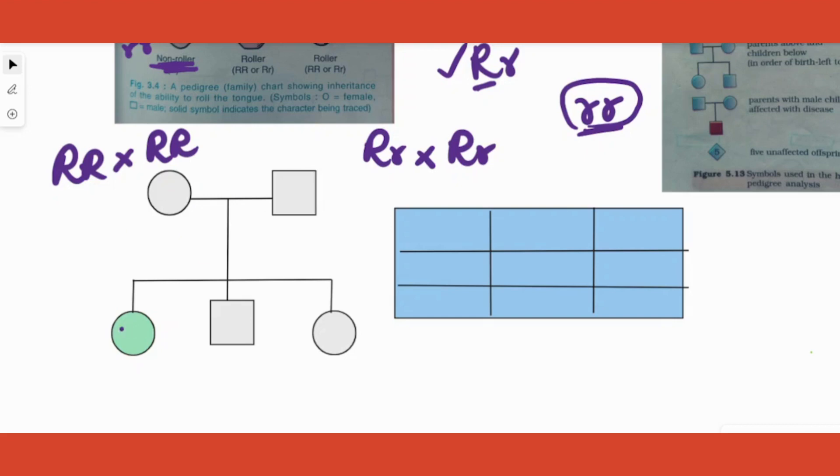So how do we backphrase the parents? To know that we have to first label the non-roller. We have this as the answer, so in the Punnett square you can put one rr which indicates a non-tongue roller. Therefore there is an r here and one more thing is among the parents.